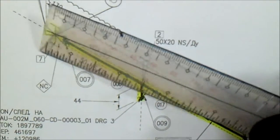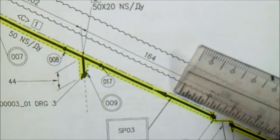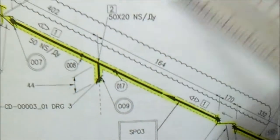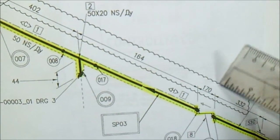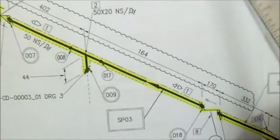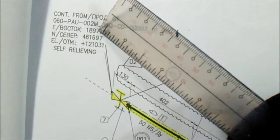And this is the gate valve, the flow direction. This arrow is the flow direction. The spool number, the joint. If you see this cloud, we have a revision from this drawing. This is the new revision. We have a continuation here and also this one. The elevation, the northing, and the easting.